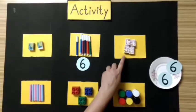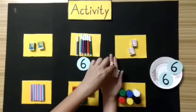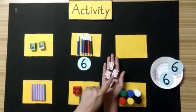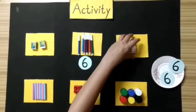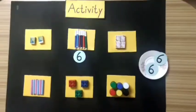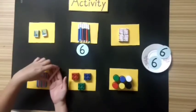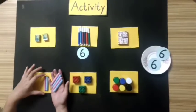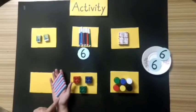Now we will count these sharpeners: 1, 2, 3, 4. These are 4 sharpeners. Now we will count these chalks: 1, 2, 3, 4, 5, 6. These are 6 chalks.